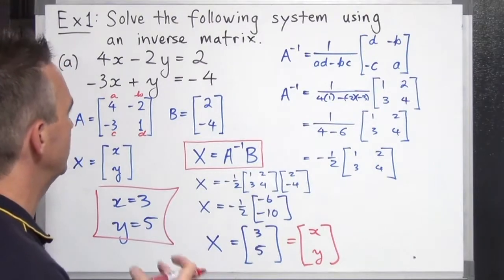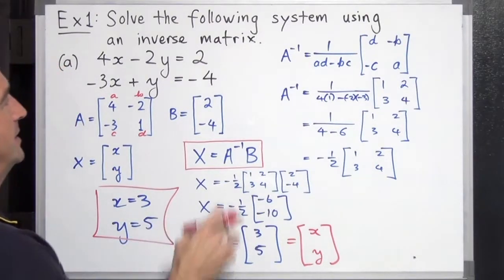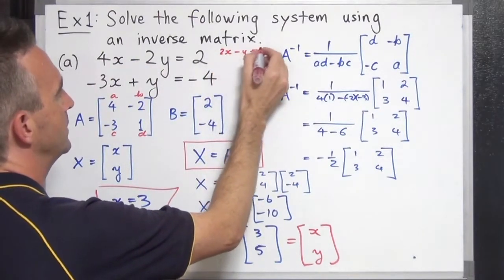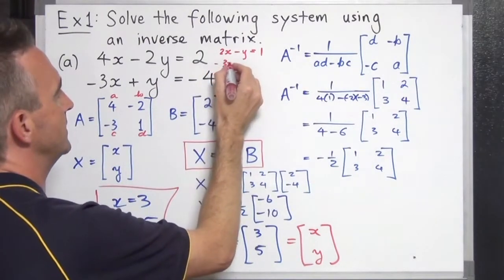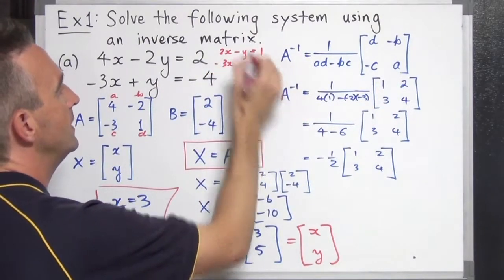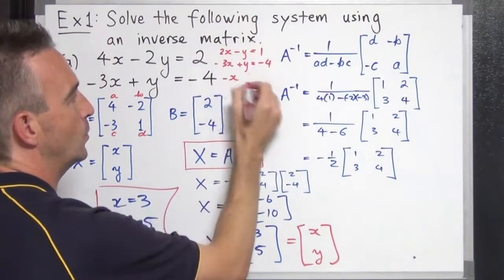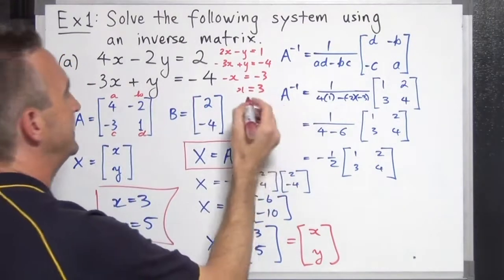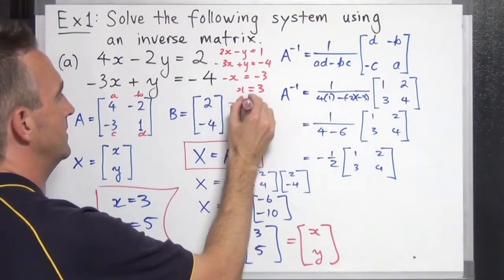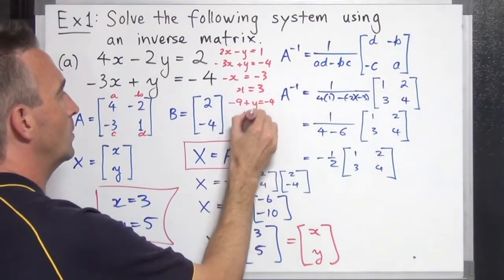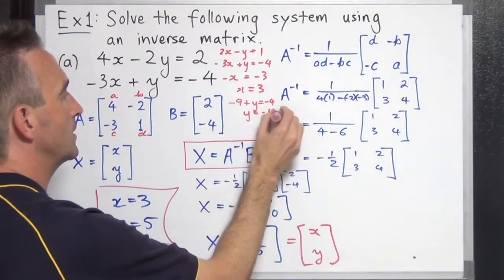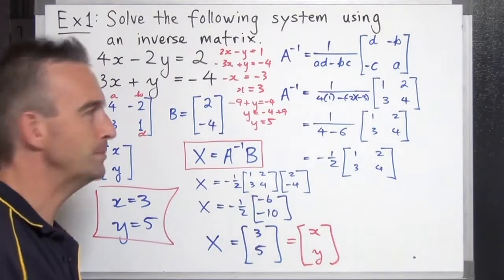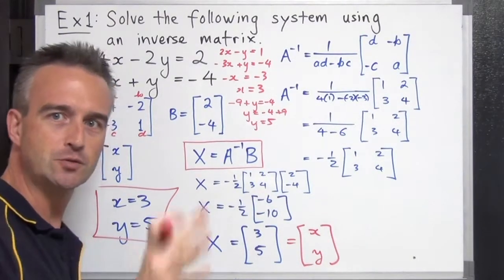This does seem like quite an annoying and long process. We could solve this quickly using elimination: divide the first equation by 2 to get 2x minus y equals 1, add the second equation minus 3x plus y equals negative 4, and we get x equals 3. Substituting back gives y equals 5. That's much quicker. Why do we do this matrix method? Maybe there are some computer applications — if you know, please drop a comment and let us know.